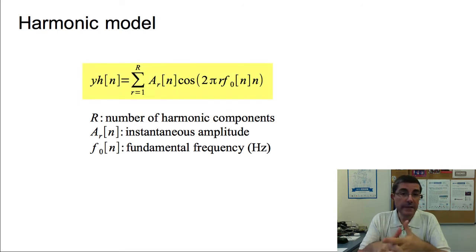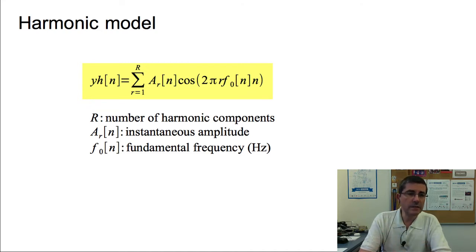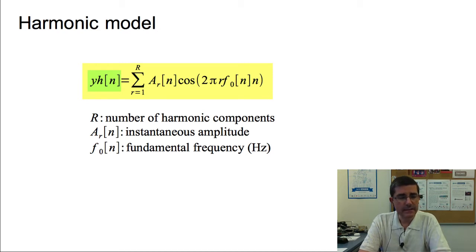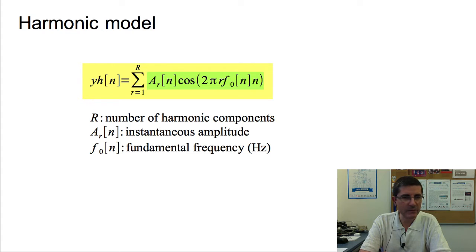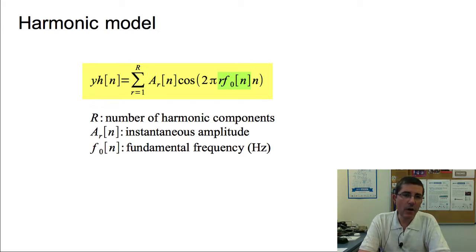The equation of the harmonic model is very close to the one of the sinusoidal model that we already explained. There is a single but very significant difference: the frequencies of the sinusoids are all multiples of a fundamental frequency. Thus, it's only valid for single source sounds produced by periodic or pseudo-periodic oscillations, like the sounds produced by many musical instruments. Looking at the equation, the output signal yh — where h emphasizes it's a harmonic signal — indexed by n, is a sum of cosine functions with time-varying amplitude and time-varying frequency, but here the frequency is not f_r, but r·f_0, meaning they are all multiples of f_0.